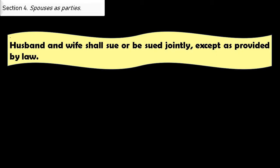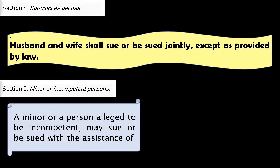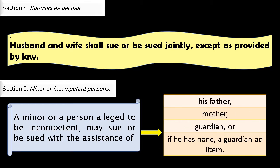Section 4 is spouses as parties: husband and wife shall sue or be sued jointly, except as provided by law. Section 5 covers minor or incompetent persons. A minor or a person alleged to be incompetent can sue or be sued as long as it is with the assistance of his father, his mother, his guardian, or if he has none, his guardian ad litem.